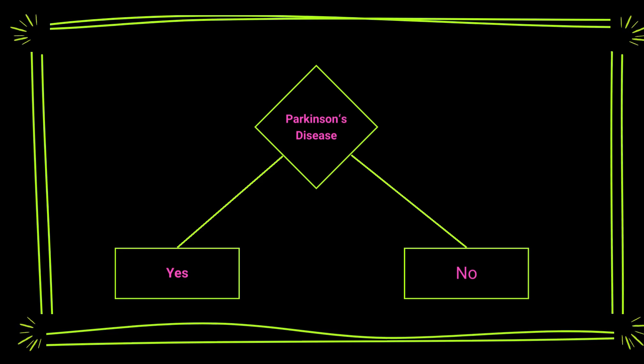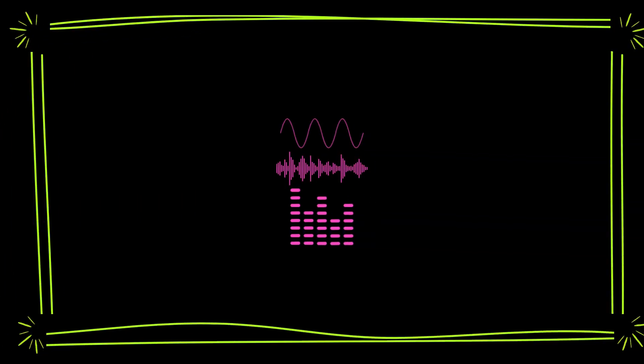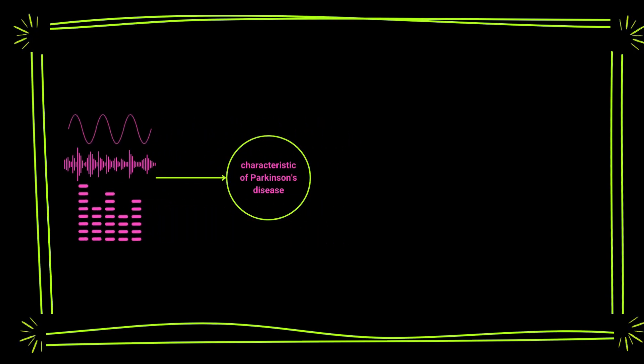The algorithms learn to distinguish patterns in the speech data that are characteristics of Parkinson's disease, allowing them to make accurate predictions about whether a particular speech sample shows the presence of the condition or not.